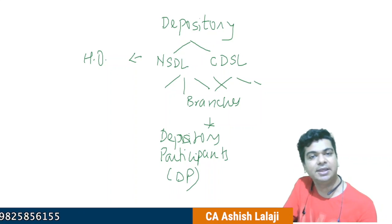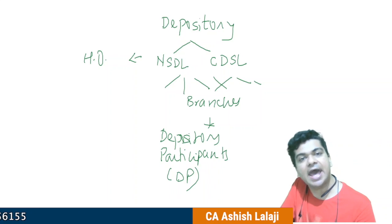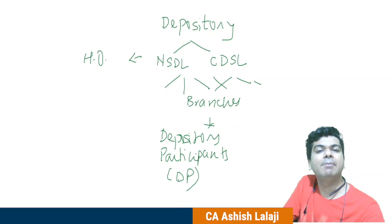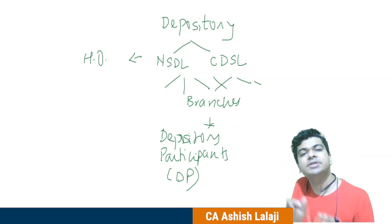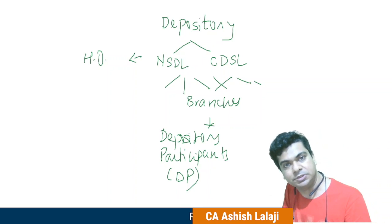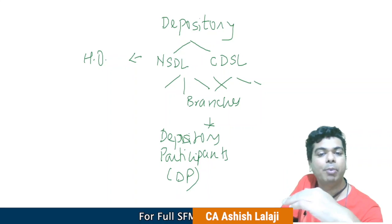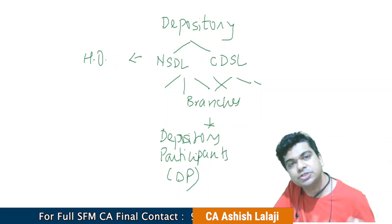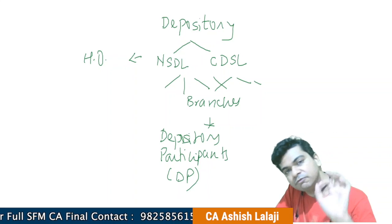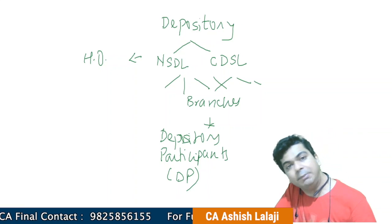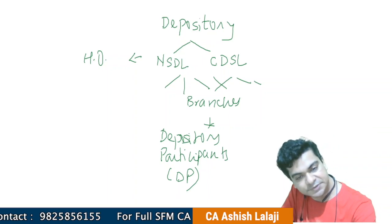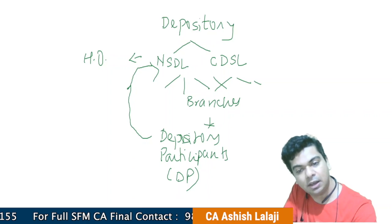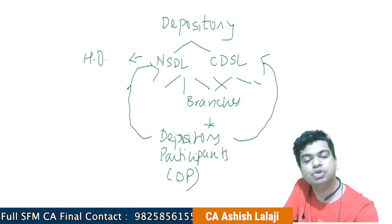Depository participants are popularly known as DPs in stock market jargon. Any bank can act as a DP; similarly a financial institution can act as a DP; even the brokers — trading members — can also act as a depository participant. So the main agency is the depository and the depository offers its services to the public through depository participants. When you open a Demat account, you are basically opening it with a depository participant, which will be associated with either NSDL or CDSL.